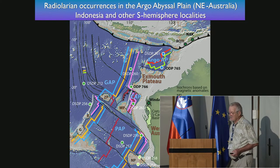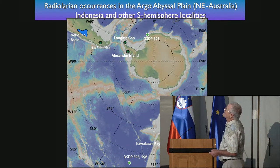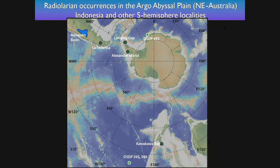We are looking at sites not only in the Argo Basin, but also in the Antarctic Peninsula and in Patagonia. There are some sites that are now farther north, but in the Cretaceous they were at high latitude. We have several sites around here, especially on the opposite side of Antarctica from the Argo Basin. So how did the radiolarians get around this? That is the main question.